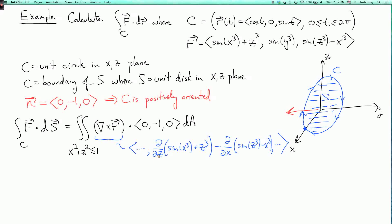So when I work this out, this sin(x³) disappears because I'm differentiating with respect to z. So you get a 3z² over here, and I get a 3x² over here.